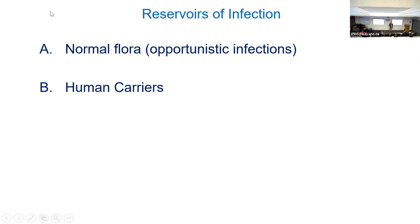Number two: human carriers. Hopefully that one's obvious — we're getting things transmitted from another person. You get a cold from someone in your household. There are sexually transmitted infections — a huge list of those. Those are the ones we're probably most familiar with.